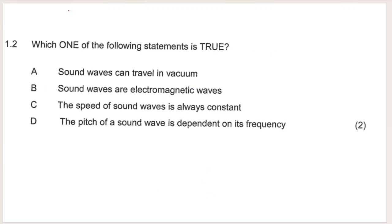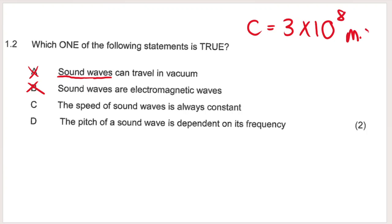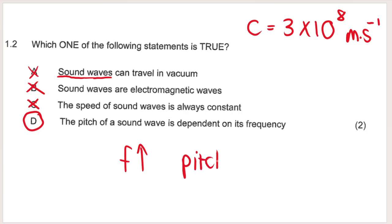Question 1.2: which one of the following statements is true? The options are: sound waves can travel in a vacuum; sound waves are electromagnetic; the speed of sound waves is always constant; the pitch of a sound wave is dependent on its frequency. Electromagnetic waves travel in a vacuum. Sound waves are longitudinal waves requiring a medium such as water or air — they're not electromagnetic. The speed of sound waves is not always constant; the speed of light is constant at 3×10⁸ m/s, but sound differs by medium. Therefore the answer is D: the pitch of a sound wave is dependent on its frequency — higher frequency gives higher pitch.